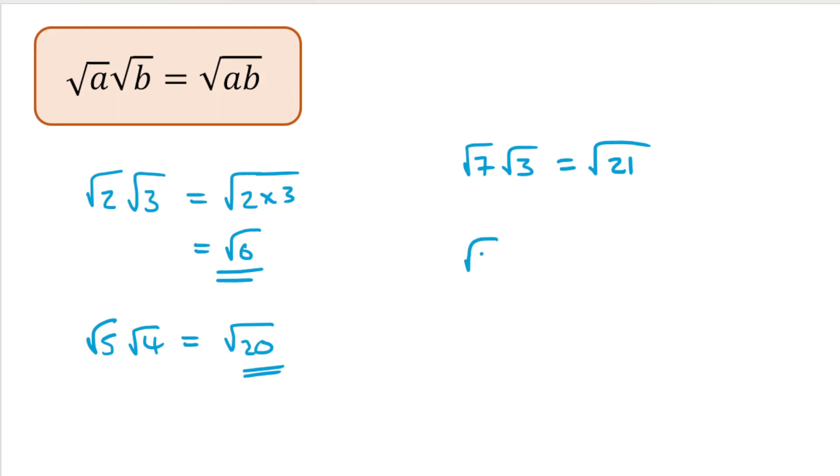Last one, root 6 times by root 4, would be equal to root 24. So that's the first rule of multiplying out surds.